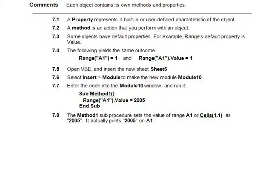For example, the range's default property is just a value. So you don't need to mention we want a value for that. Range A1 is 1 is same as Range A1 Value is 1 because that's the default one.